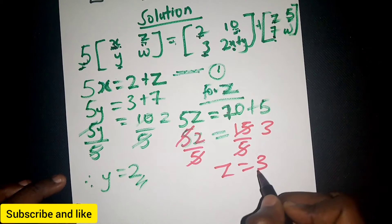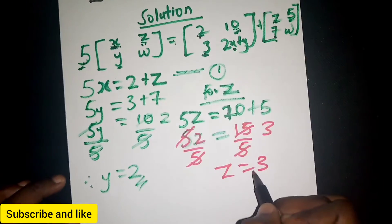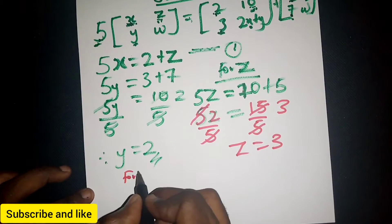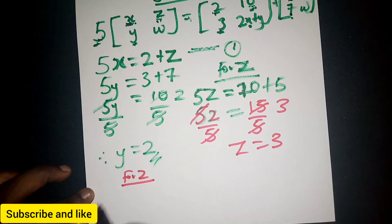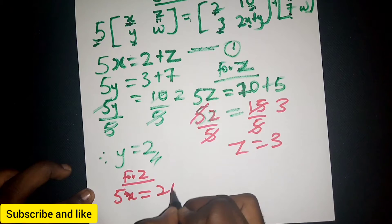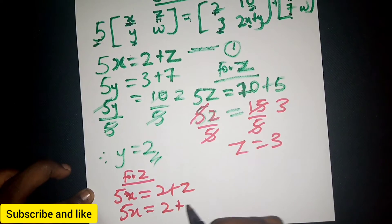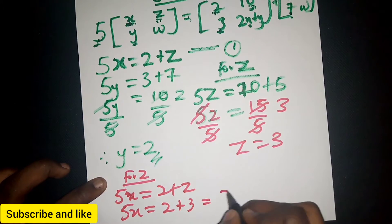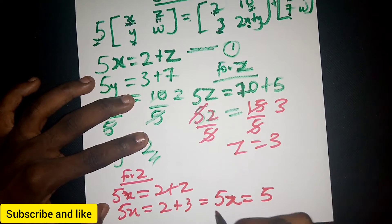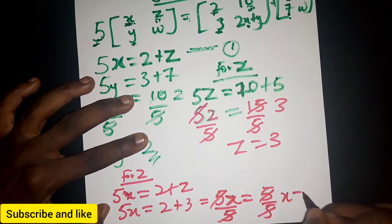Now we established that 5x = 2 + z. We can substitute the value of z. So 5x = 2 + 3 = 5. Dividing both sides by 5, x = 1.